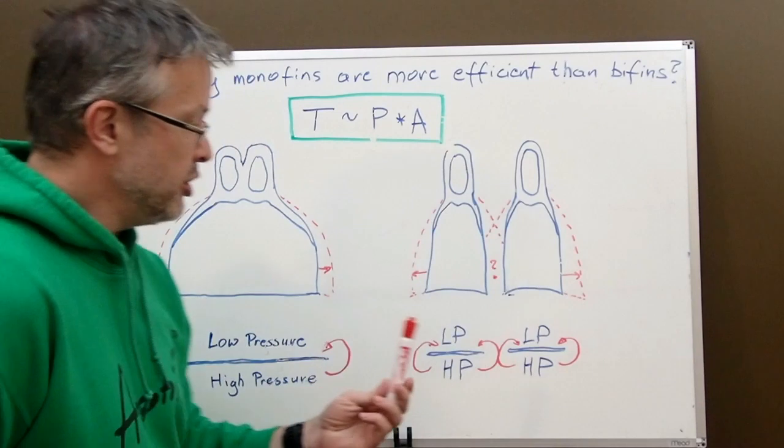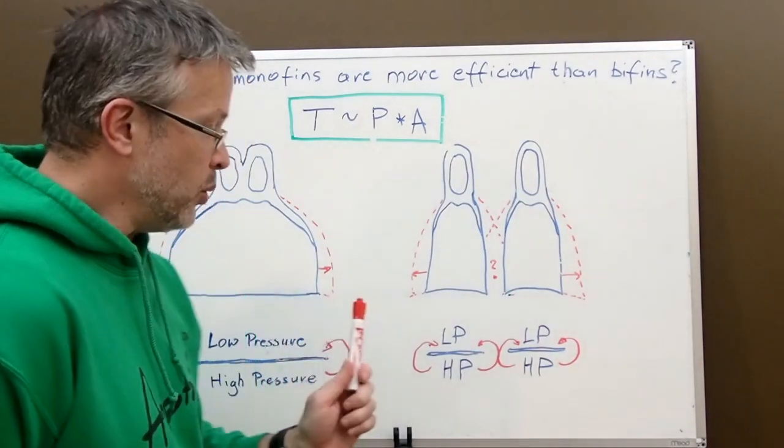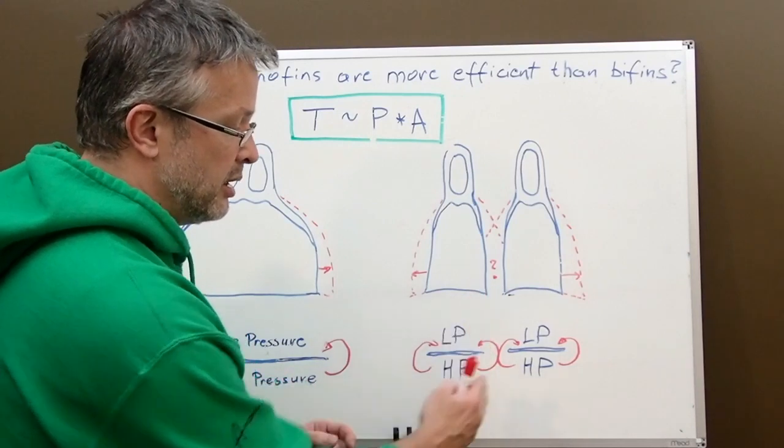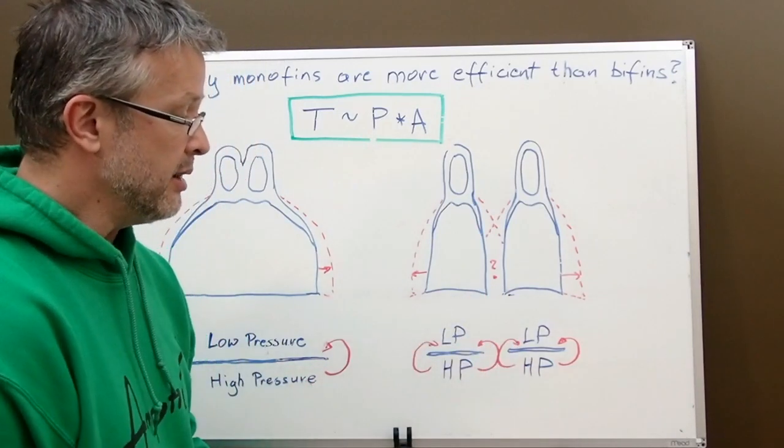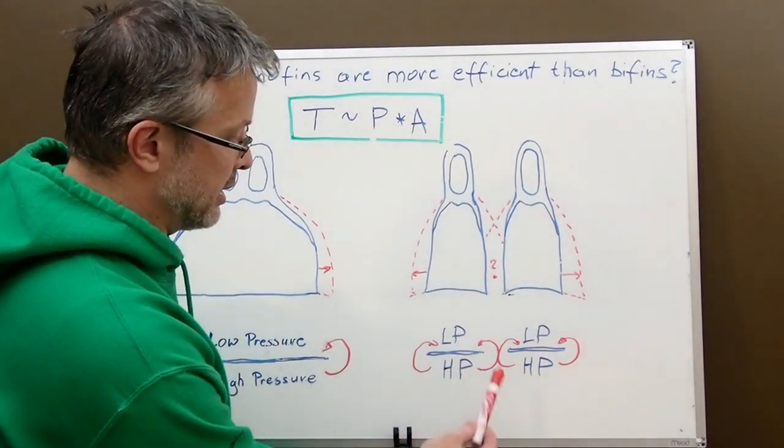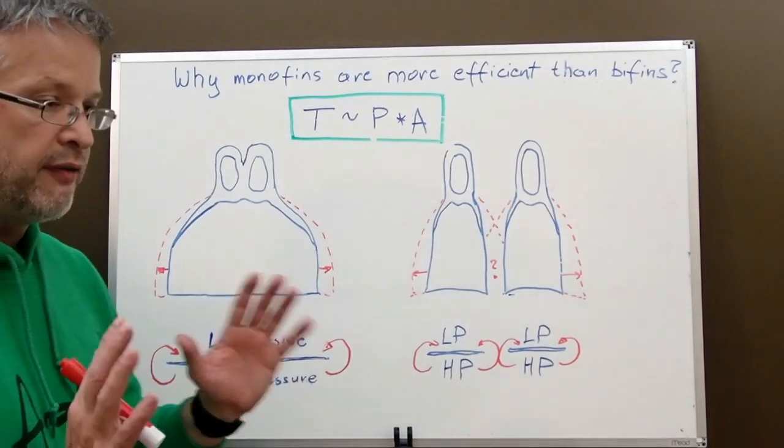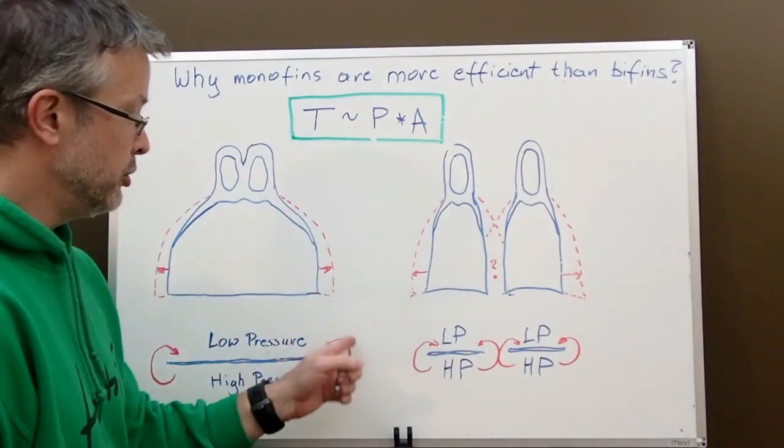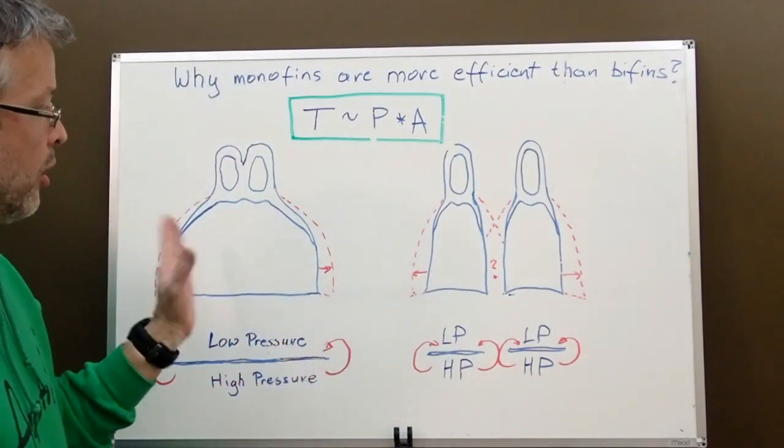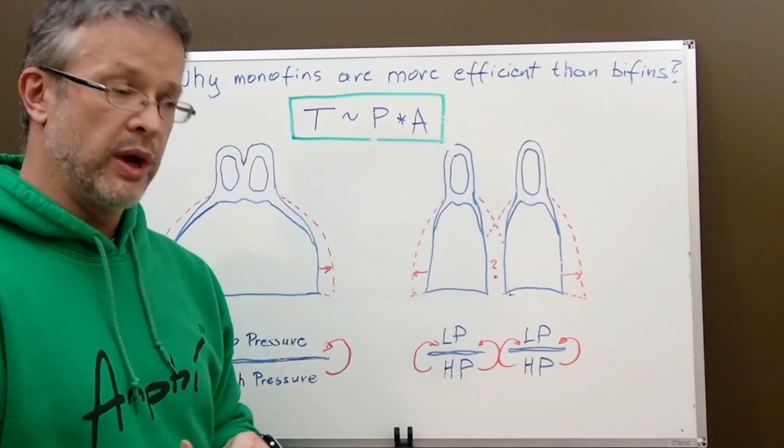With bifins let's assume we have a similar situation. Low pressure on the top and high pressure at the bottom. Now we see that we have more leakages of this from the high pressure to low pressure because we have additional edges, or two edges in this particular case. So we will have a leakage on this side, the same we had in here, but we will also have a leakage on this side and on the other fin we have another leakage here, another leakage here. So effectively this configuration has 50% more pressure loss due to this effect.